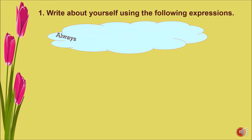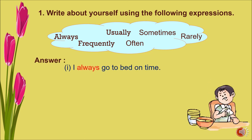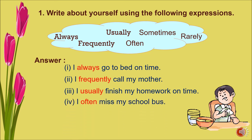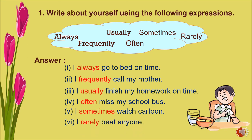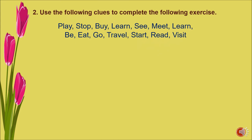Next session: creative writing. Question one — write about yourself using the following expressions: always, frequently, usually, often, sometimes, rarely. Answer: I always go to bed on time. I frequently call my mother. I usually finish my homework on time. I often miss my school bus. I sometimes watch cartoons. I rarely beat anyone.